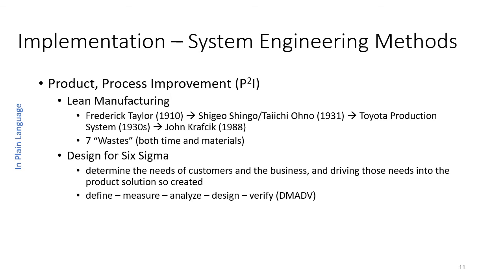Those are the four system engineering implementation methods: integrated product development team, inspections, lean manufacturing, and design for Six Sigma.